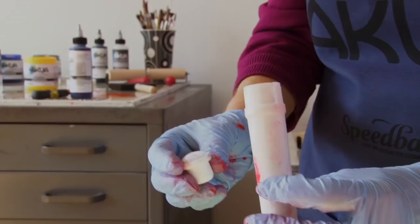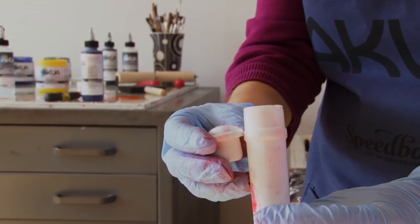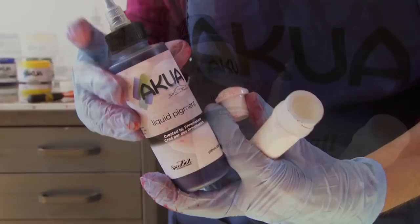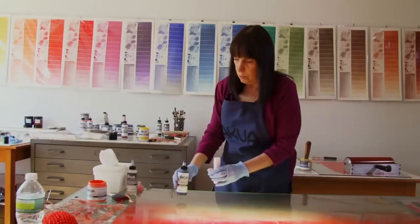I'm going to use the Speedball Sponge Dauber and it works great with Akua Liquid Pigment. First, you have to shake the bottle and I'm going to use the liquid pigment with a little bit of retarder to keep the ink moist.